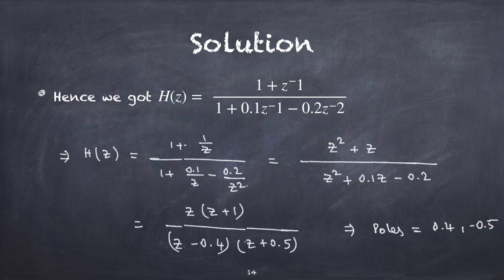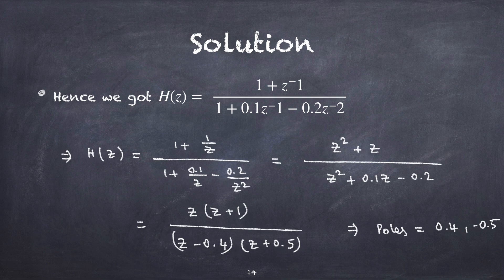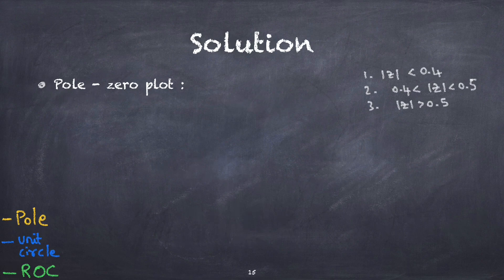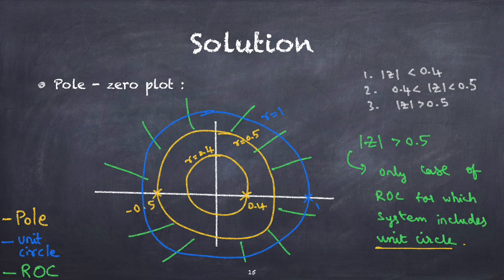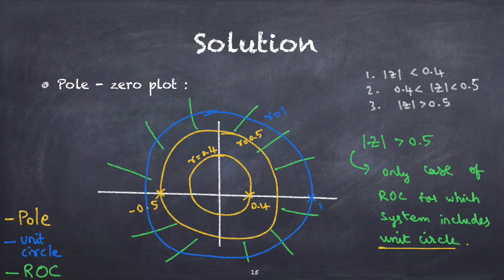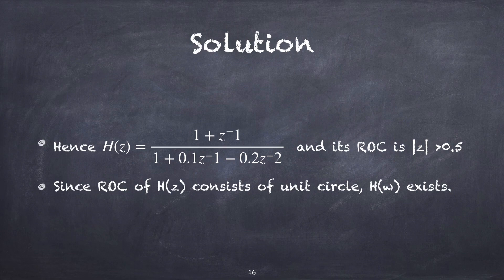To find the ROC of H(z), we find the poles. Solving, the poles are at 0.4 and −0.5. Representing poles in yellow, the unit circle in blue, and the ROC in green, there are three possible ROC cases: |z| < 0.4, 0.4 < |z| < 0.5, and |z| > 0.5. Of these, only |z| > 0.5 includes the unit circle. Hence, the ROC is |z| > 0.5, and H(z) with this ROC contains the unit circle, so H(ω) exists.